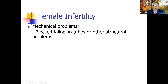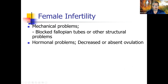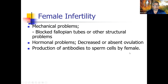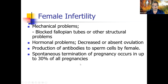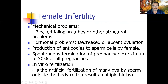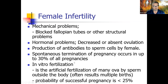Female infertility can be due to mechanical problems — blocked fallopian tubes from disease, injury, or other structural problems — or hormonal problems such as decreased or absent ovulation. Some women produce antibodies to sperm cells, preventing fertilization. Spontaneous termination of pregnancy — miscarriage — occurs in up to 30% of all pregnancies. In vitro fertilization artificially fertilizes ova by sperm outside the body and can result in identical or fraternal twins since multiple ova are often implanted. Success rate is less than 25%.